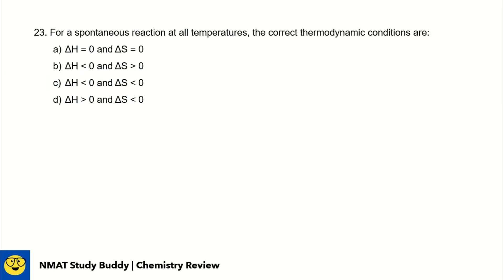Number 22, what is the condition for a spontaneous reaction? Spontaneity is measured by the Gibbs free energy or delta G, and delta G should be negative. Number 23, for a spontaneous reaction at all temperatures, the correct thermodynamic conditions are? Spontaneity is described by delta G, the Gibbs free energy, which is dependent on delta H minus T delta S. Since it says all temperatures, we'll only consider delta H and delta S as factors. We want the process to be spontaneous. When spontaneous, delta G should be negative. To make this negative, it's better if the minuend is negative. When the minuend is negative, there's a higher chance the whole difference will be negative. And to ensure the difference is negative, this should be positive. Negative minus positive will give us a more negative result. This means delta H should be less than 0 and delta S should be greater than 0, which is letter B.